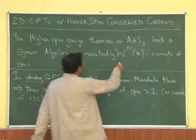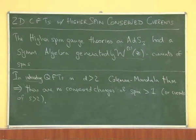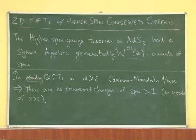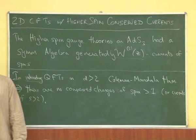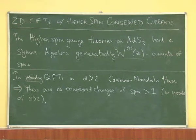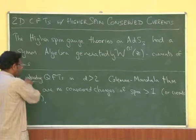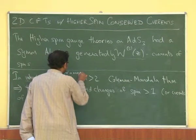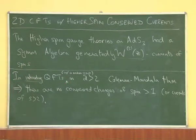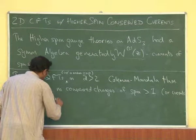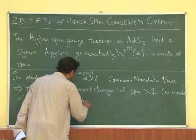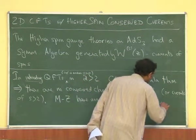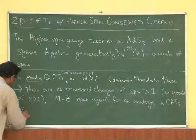We are talking here about currents in a two-dimensional theory. Indeed, in two dimensions you can violate the Coleman-Mandula theorem — or rather, there is no theorem for the two-dimensional case. There are many quantum field theories, so-called integrable quantum field theories, which have conserved currents of spin greater than 2. The original Coleman-Mandula theorem was for a theory with a mass gap. But recently, Maldacena and Gibodev have argued for an analog in CFTs with D greater than 2.